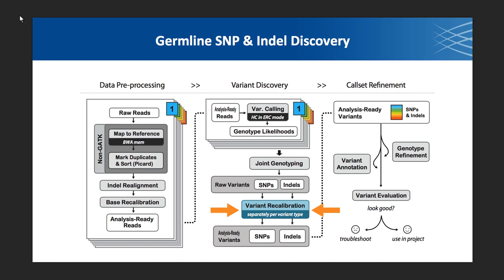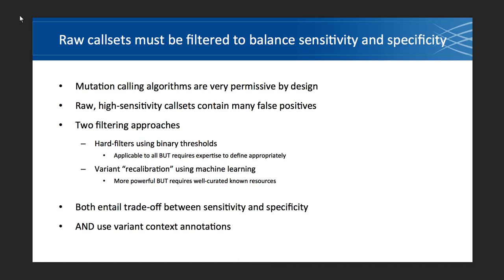We filter either a variant we think is bogus and filter it out, or we say this variant is okay and leave it in. It's not quite as simple, but that's how you should think of it. In general, there are two filtering approaches. One is hard filters — there are various annotations put into the variants. For example, we have a quality score, and someone might filter variants based on quality. If quality is greater than 30 it's good, if it's less than 30 it's bad. That's an example of a hard filter — it's not a very good one, but it's an example.